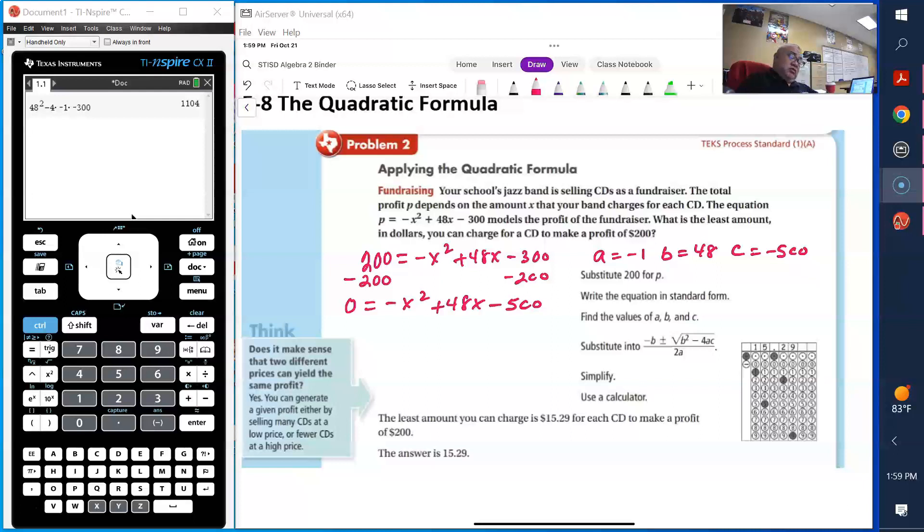So what I'm going to do is I'm going to use the quadratic formula. The quadratic formula is located right here. So I have negative b, in this case it will be negative 48 plus or minus square root. And the expression that's inside the radical is called the discriminant. So we have 48 squared minus 4 times negative 1 times 500, divided by 2a, so in this case it's going to be 2 times negative 1.